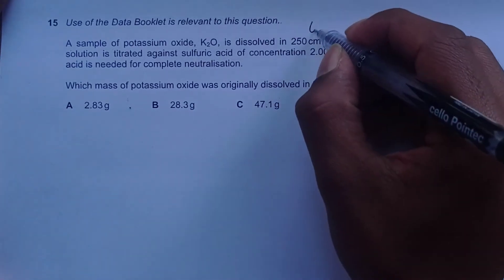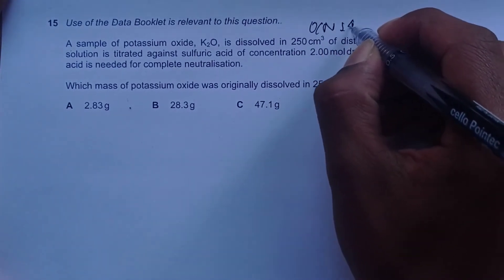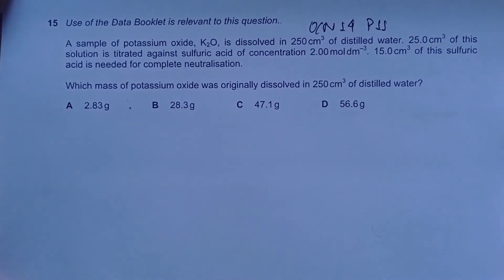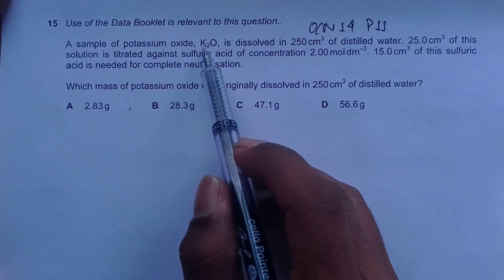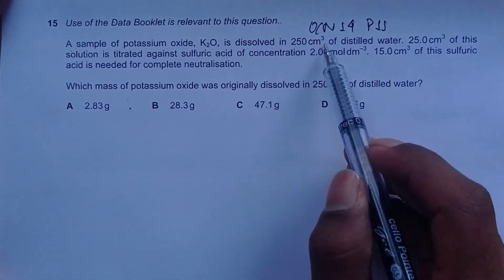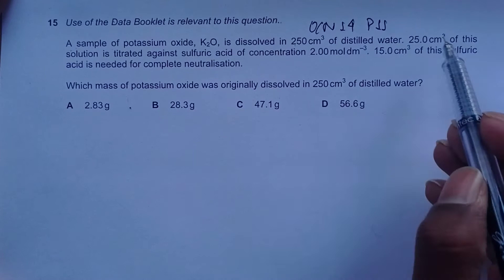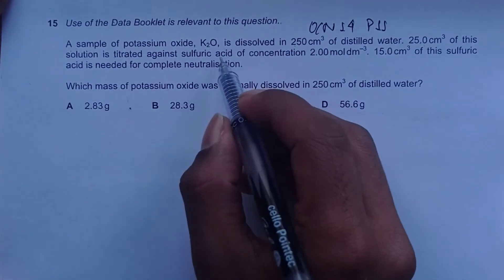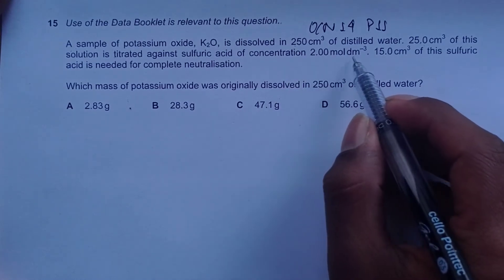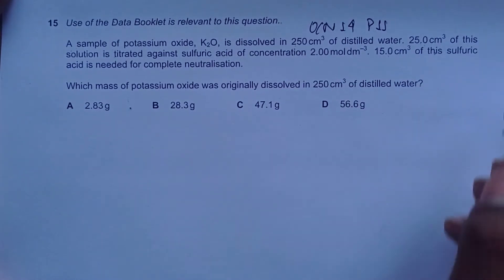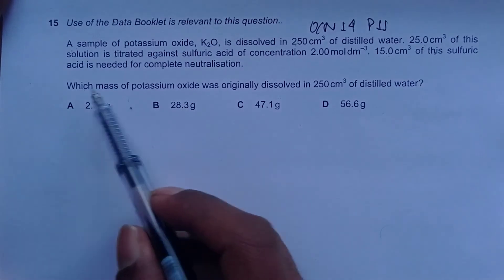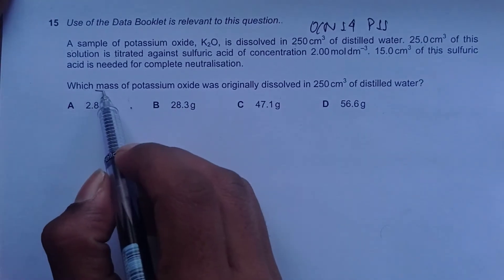Hello everyone, this is a November 14 question paper 1, question number 15, concerned with the chapter on atoms, molecules, and stoichiometry. The question reads: a sample of potassium oxide is dissolved in 250 cm³ of distilled water. 25 cm³ of this solution is titrated against sulfuric acid of concentration 2 mole per dm³.